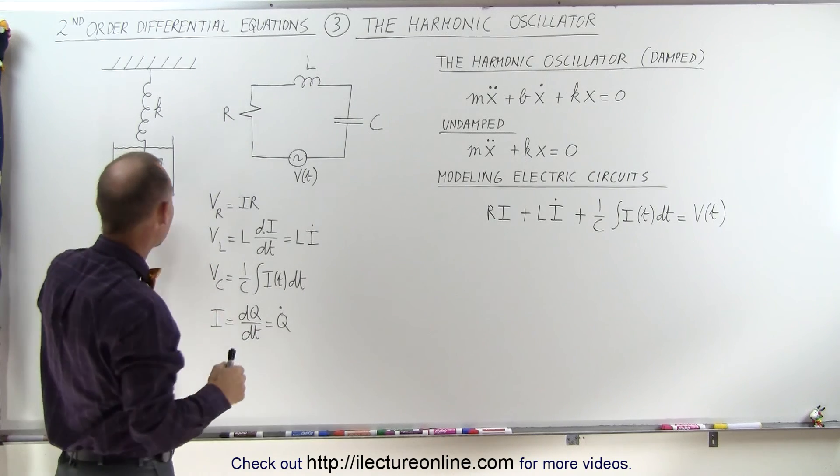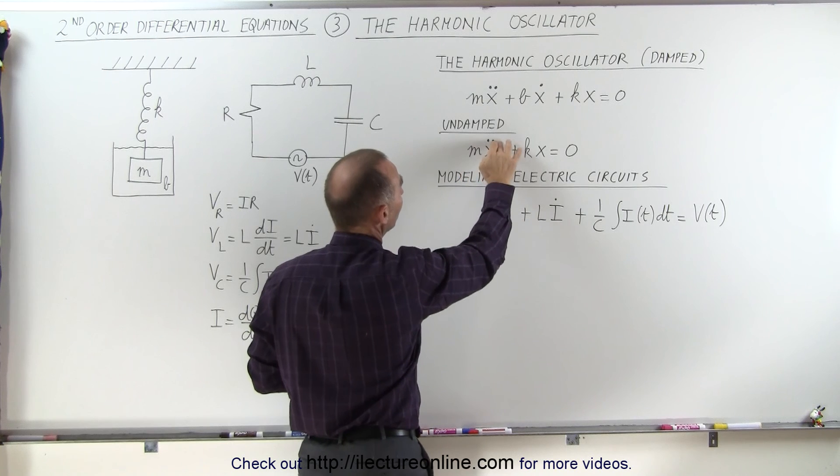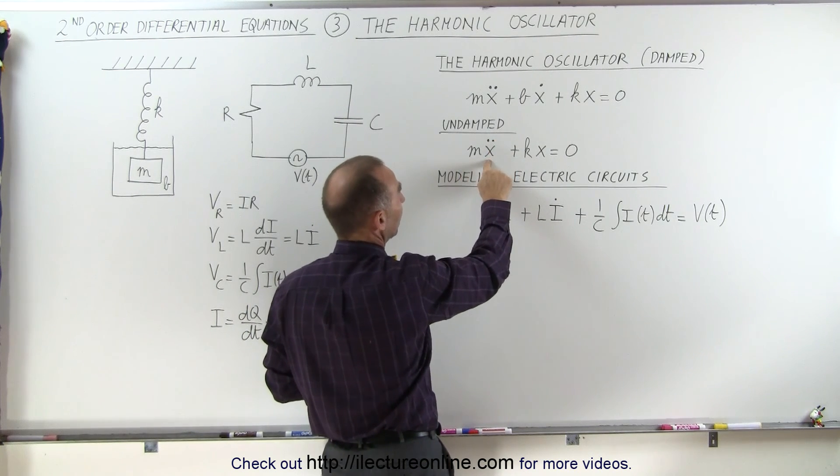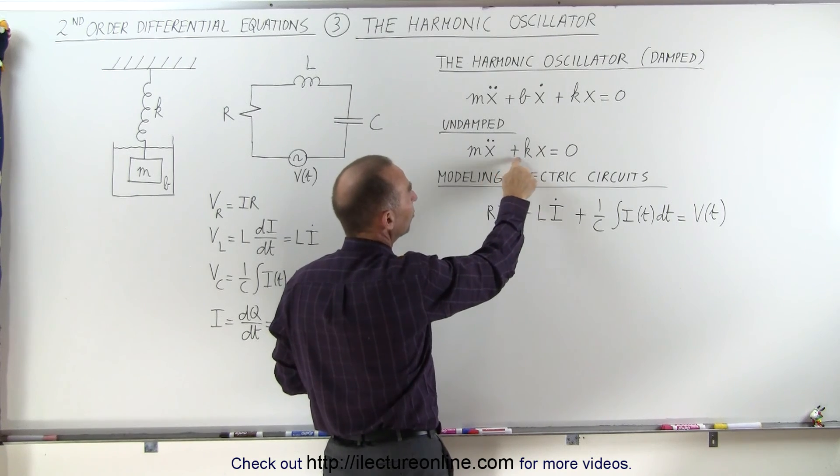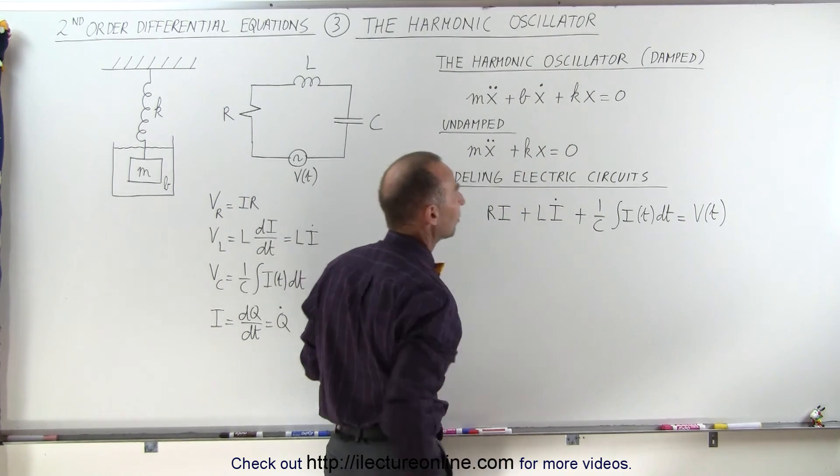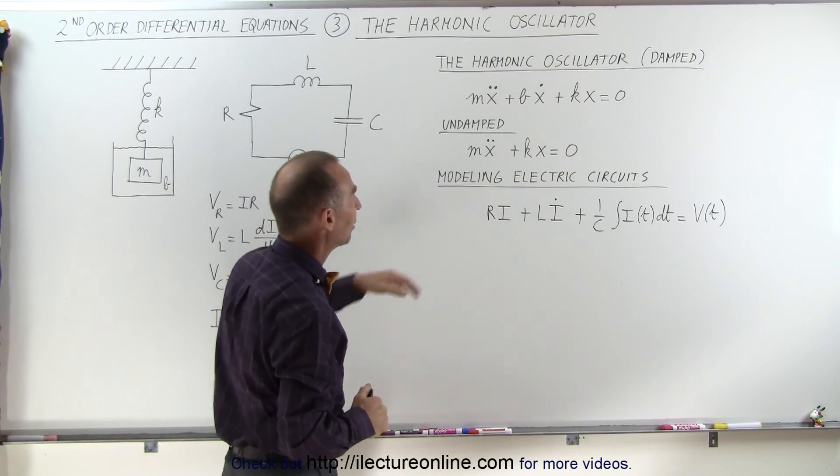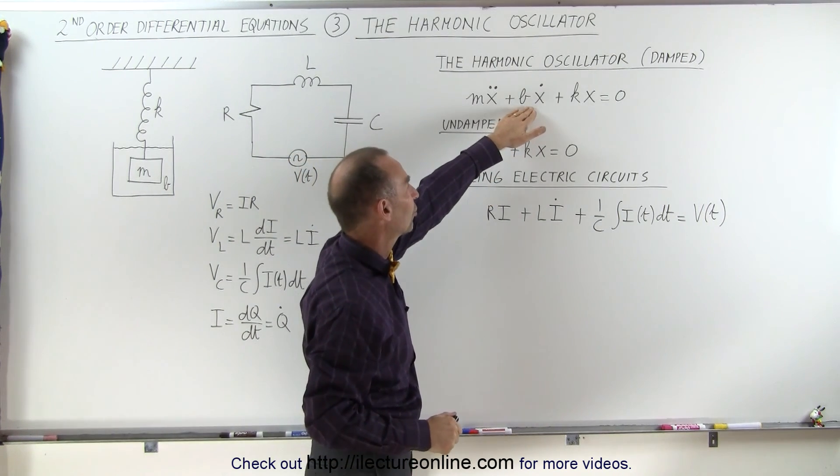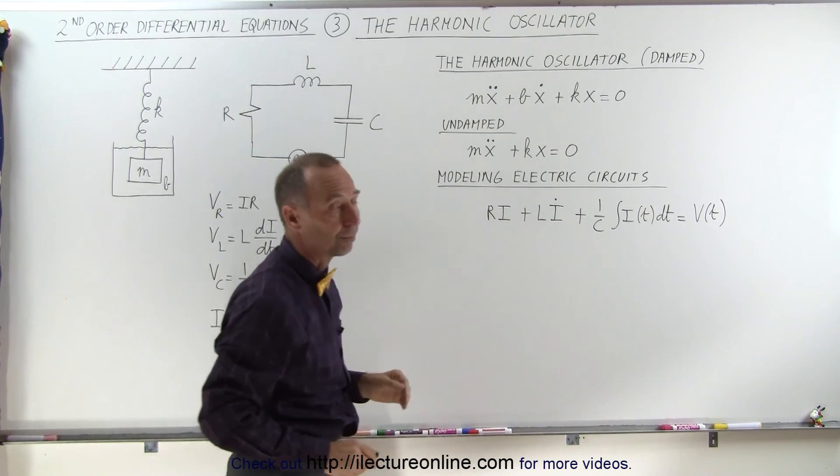If we take away the damping effect, if there's no damping effect, then the equation simply becomes mx double dot, which is the second derivative of x with respect to time, which is mass times acceleration, plus kx, which is the force acted upon the object by the spring. And notice there's no damping factor, so this simply disappears. So this is the damped situation and the undamped situation.